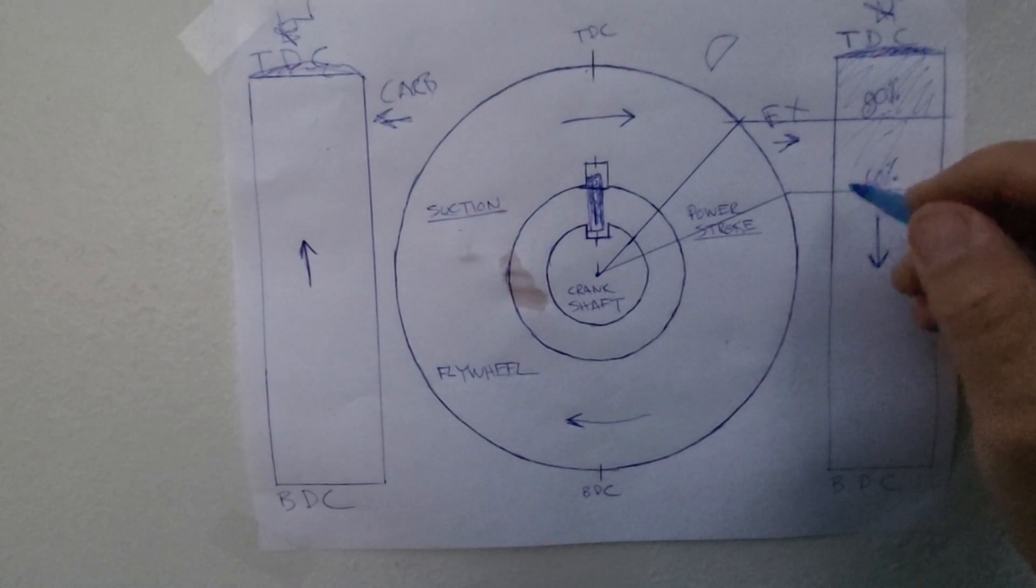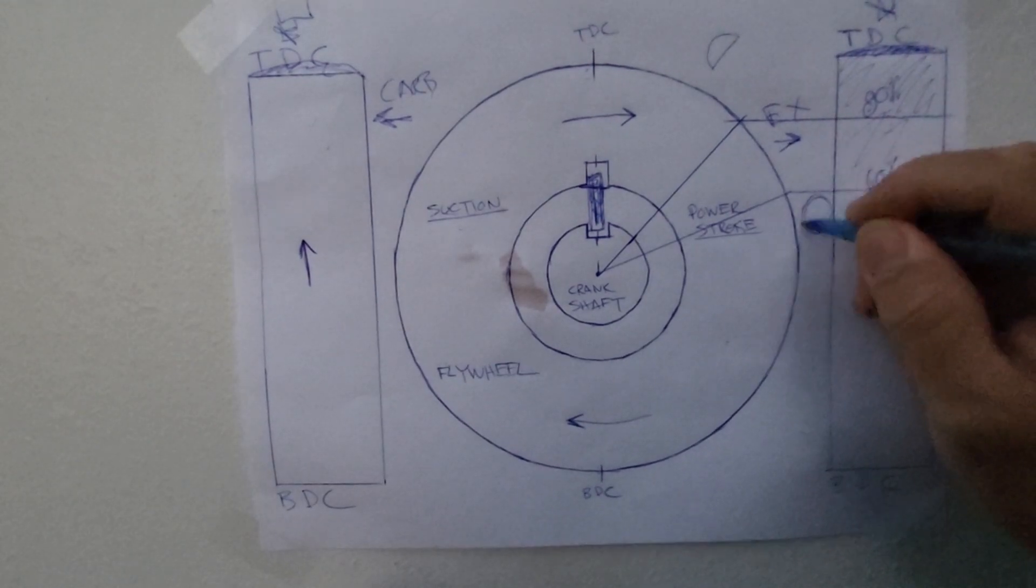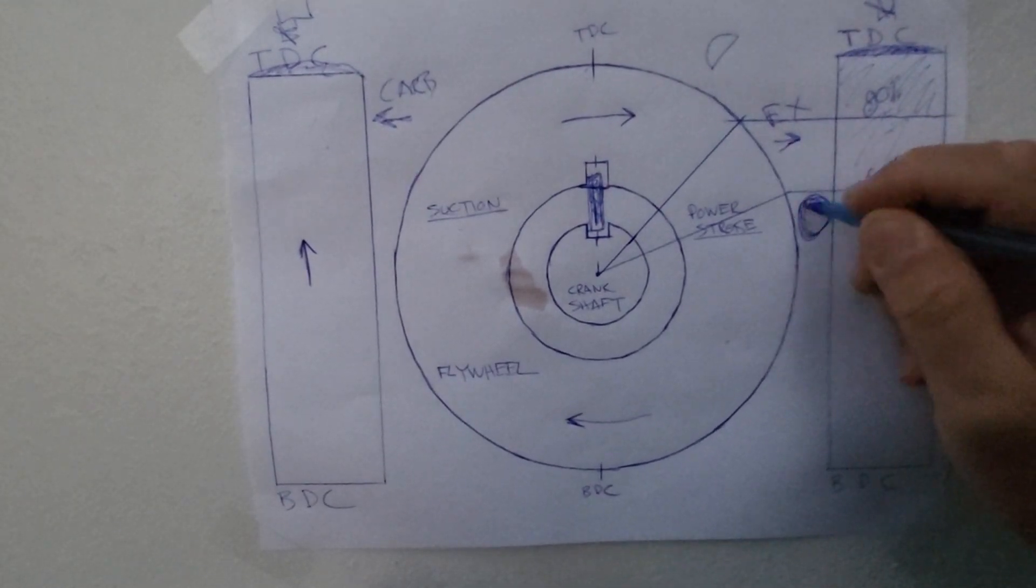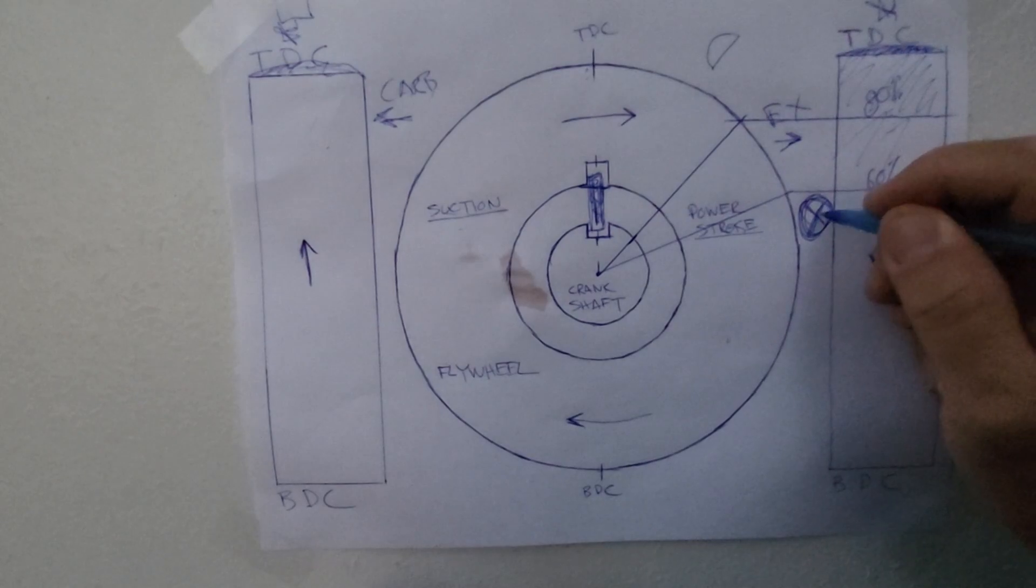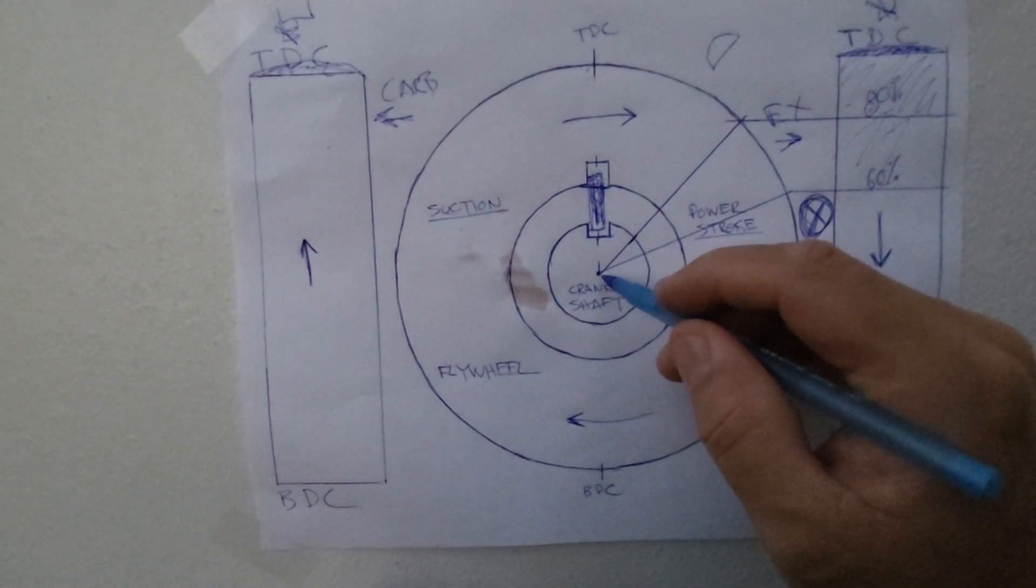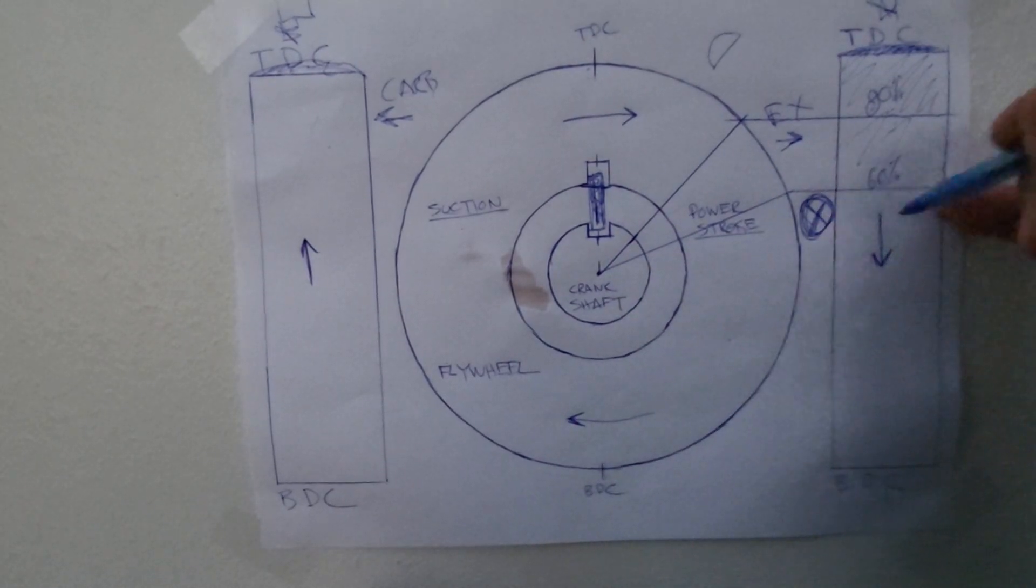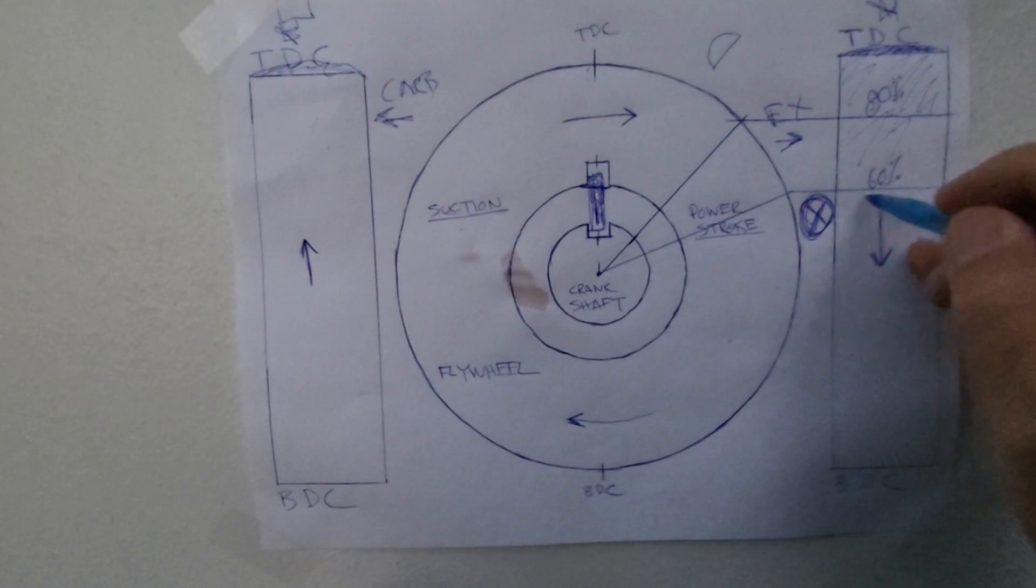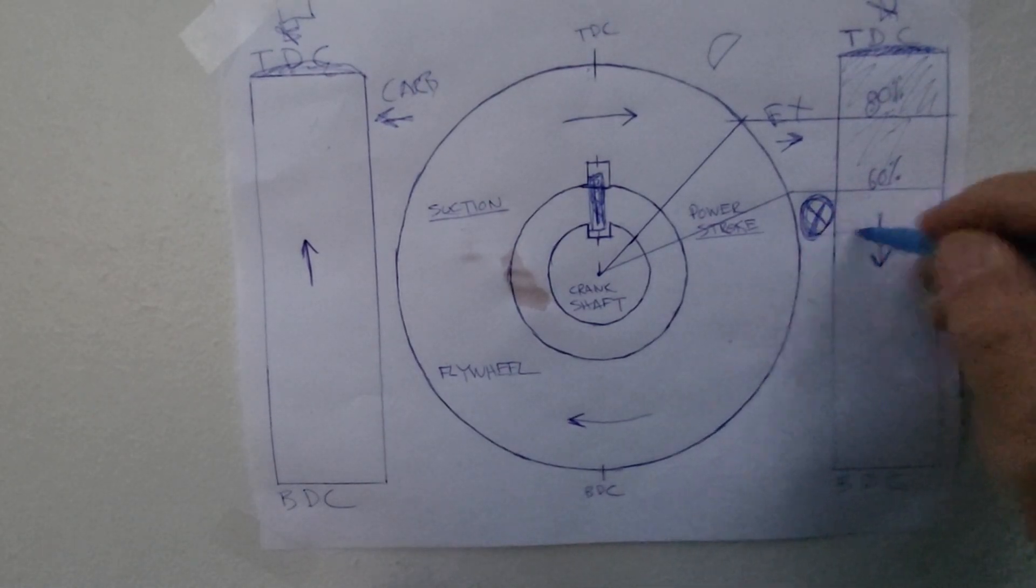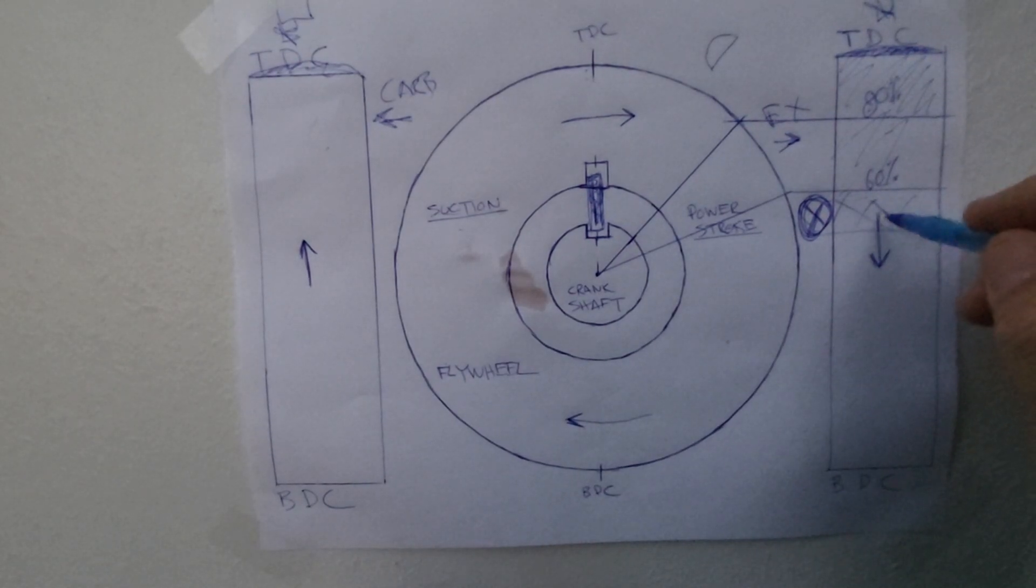Now your exhaust port is something like right around this area here. This is your exhaust port. This is where the gas exits the cylinder. The moment you have your sheared keyway go past this on the power stroke and it's in this area from right here to right here, you go down quite a lot.